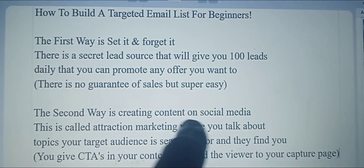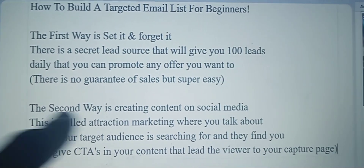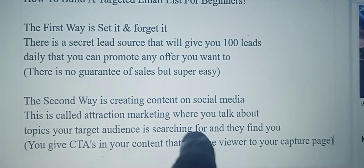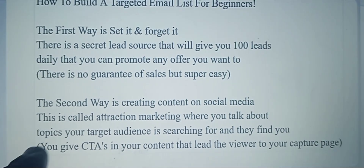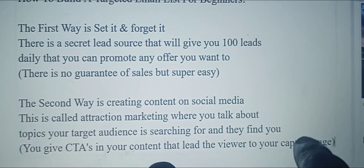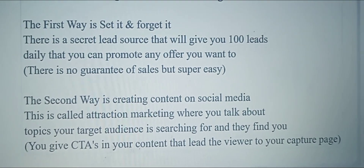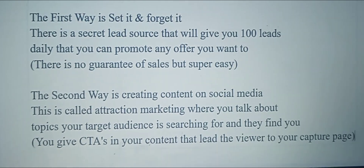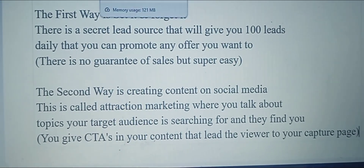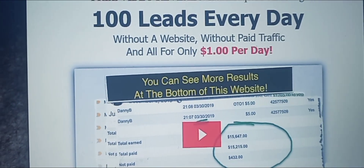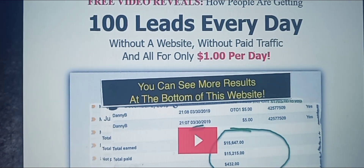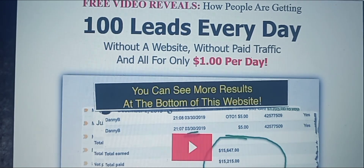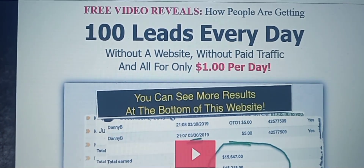The second way is creating content on social media — this is called attraction marketing, where you talk about the topics your target audience is searching for and they find you. You give CTAs in your content that lead the viewer to your capture page. The CTA is like, 'Hey, if you want information on this, I have the website link directly below.' The way I got so many referrals with My Lead Gen Secret is I know there are many digital marketers who don't want to do videos or create content — they just want something easy where they get leads every day.